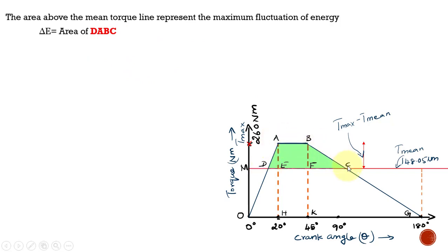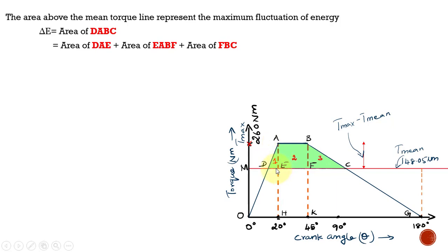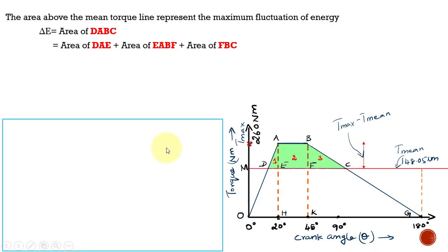ΔE = area of DAPC, which we split into three regions: triangle DAE, rectangle EABF, and triangle FPC. To find these areas we need the distances DE and FC. For the rectangle we already have all data, but for the triangles we must find DE and FC using the similar triangle concept.